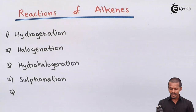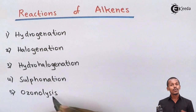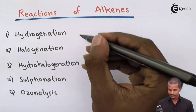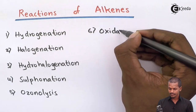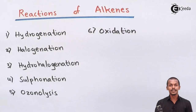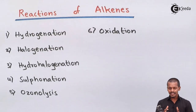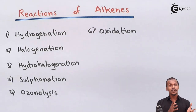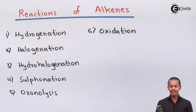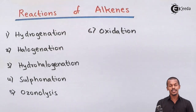The fifth is ozonolysis — the introduction of ozone into the alkene — and the sixth is oxidation. So these are the chemical properties we are going to talk about: hydrogenation, halogenation, hydrohalogenation, sulphonation, ozonolysis, and oxidation.